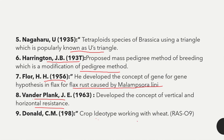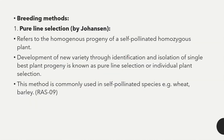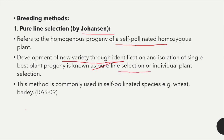The first breeding method is pure line selection, given by Johannsen. It refers to the homogeneous progeny of a self-pollinated homozygous plant. The development of a new variety through identification and isolation of a single best plant progeny is known as pure line selection or individual plant selection. This method is commonly used in self-pollinated species like wheat and barley.